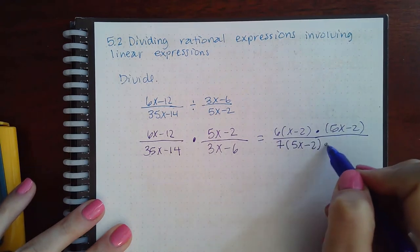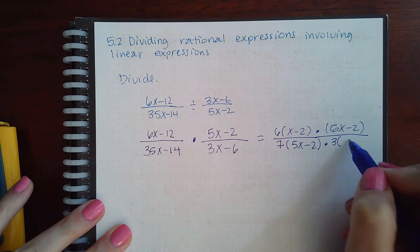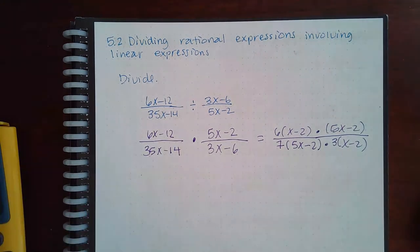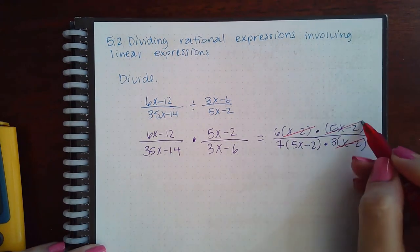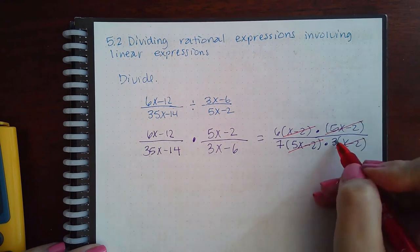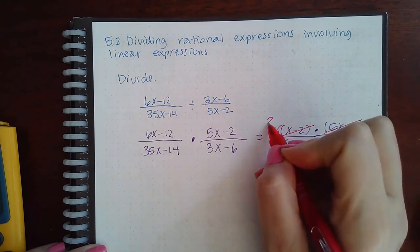And then here I can factor out a 3, I get x - 2. So then now to reduce one numerator with one denominator, the x - 2's will reduce, the 5x - 2's will reduce, even the 3 will reduce with the 6.